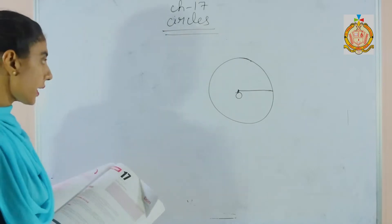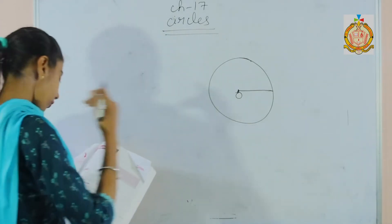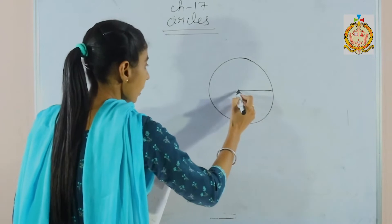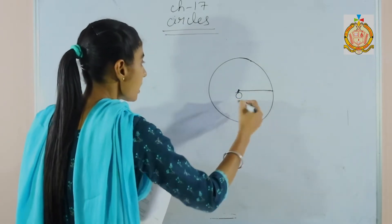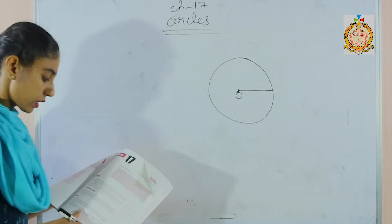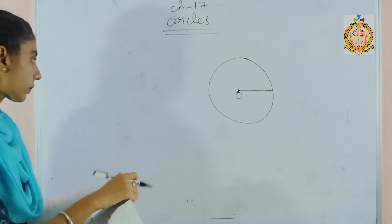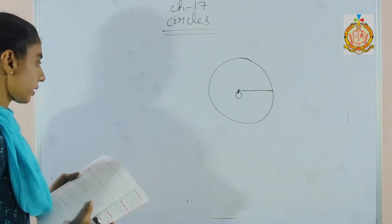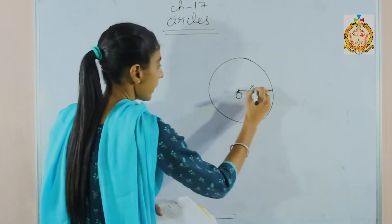Next is the radius. The radius of a circle is the length of the line segment from the center to the circumference of the circle. This is the radius.